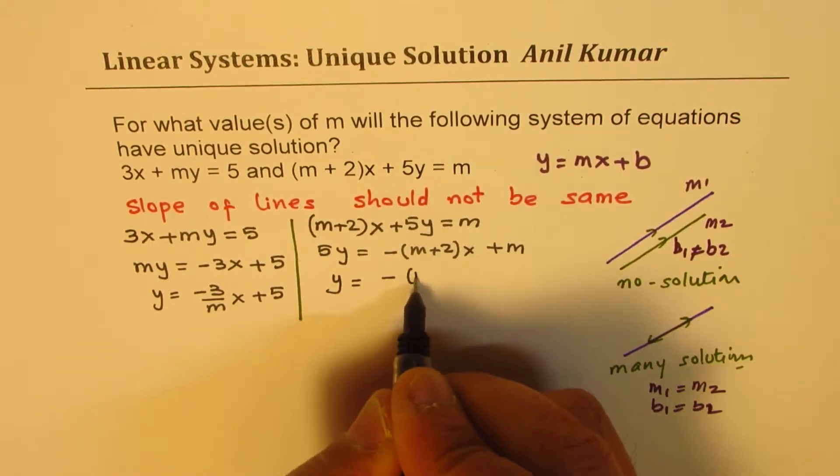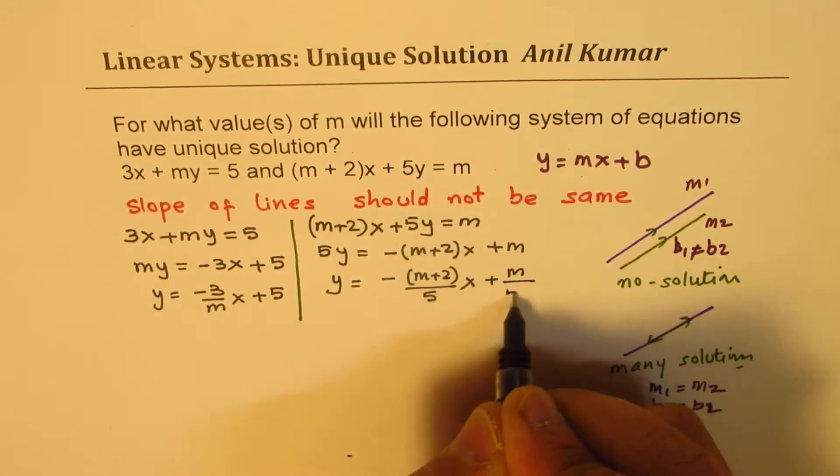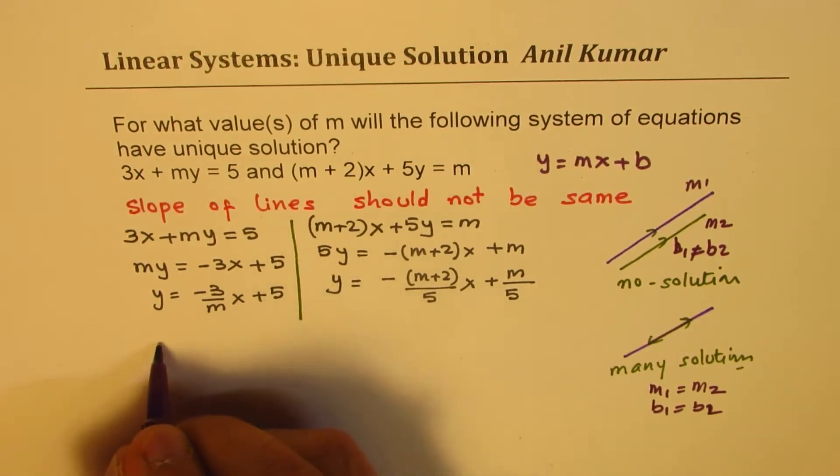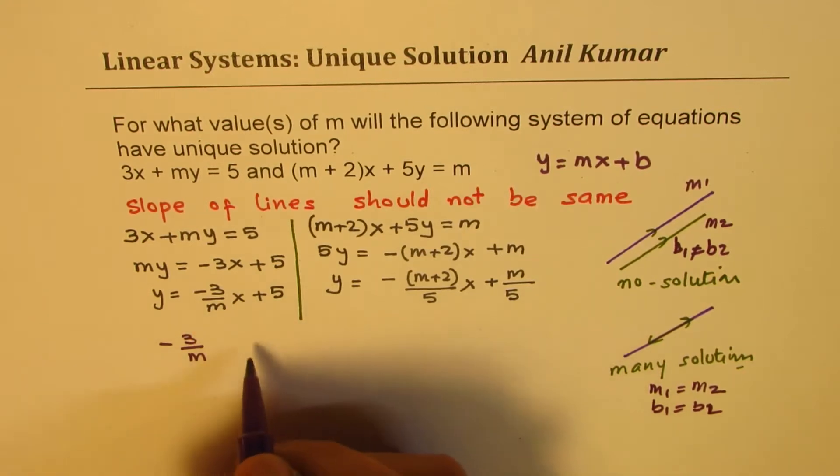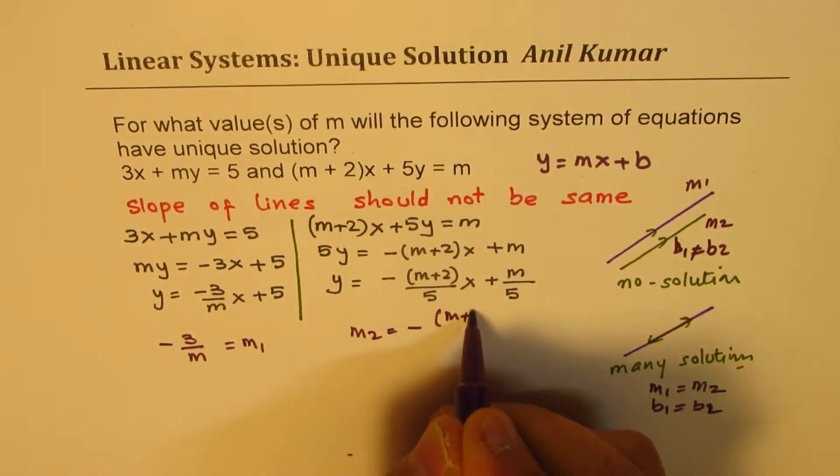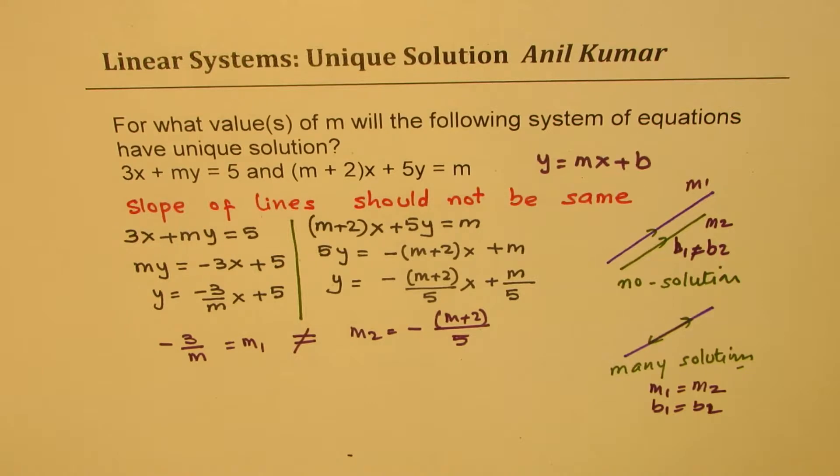y is equal to minus of m plus 2 over 5 times x plus m over 5. Now since we want these slopes to be different, what we are saying here is that minus 3 over m, which is the slope of the first line, this is m1, correct? For the second line the slope is minus of m plus 2 over 5. We want these to be different, we want them not to be same. That is what we are looking for.